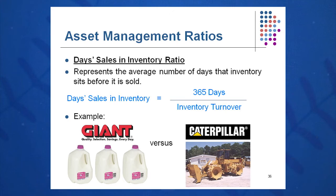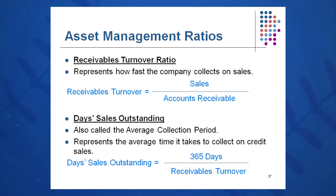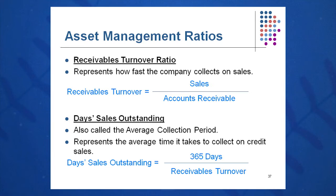Days sales in inventory is 365 days divided by inventory turnover, giving us DSI. Receivables turnover is sales over accounts receivable. From that, days sales outstanding — DSO, also called average collection period — is 365 days divided by receivables turnover. DSO is the term you'll see in the workplace. It's a very important ratio in almost every business. Inventory turnover is more critical in companies with significant inventory; if you don't carry much inventory, it's less critical.